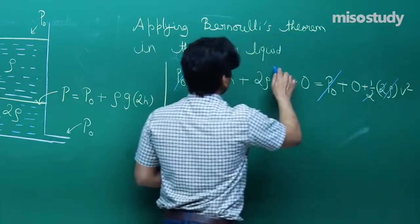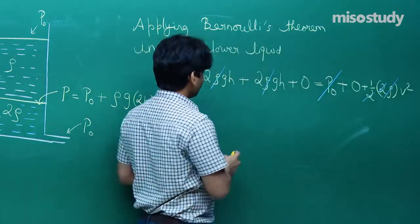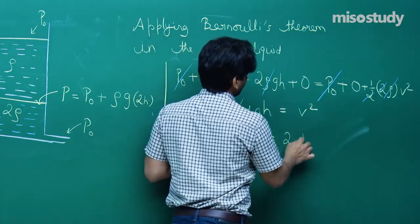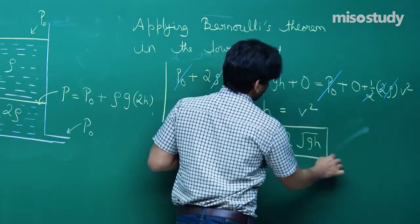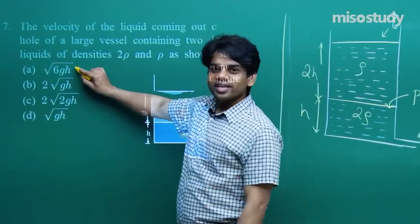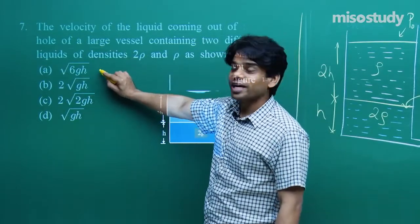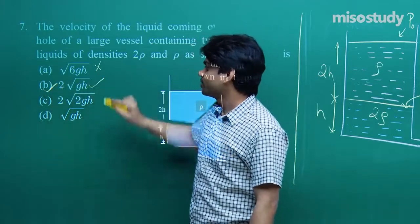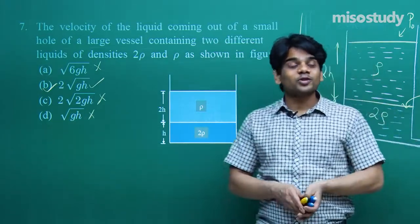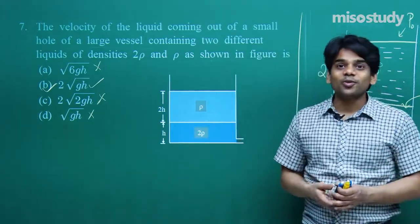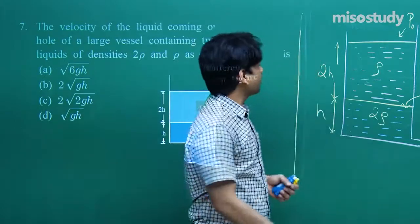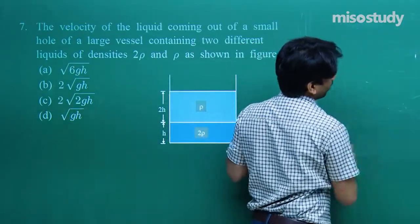Cancelling p₀ and the factor of 2ρ throughout: 2gh + 2gh = v², giving 4gh = v², so v = 2√(gh). Checking options: (a) √(6gh) is the common wrong answer; (b) incorrect; (c) 2√(2gh) — wait, the correct answer is 2√(gh) which corresponds to option... checking: the answer is 2√(gh). For three or four liquids, apply this same Bernoulli method layer by layer. You can try framing your own question with three liquids to practice.